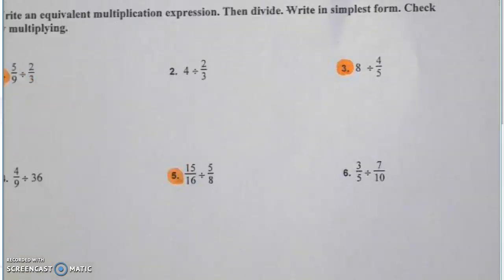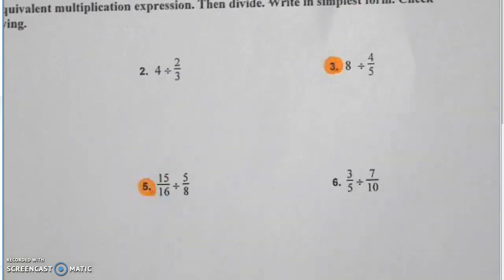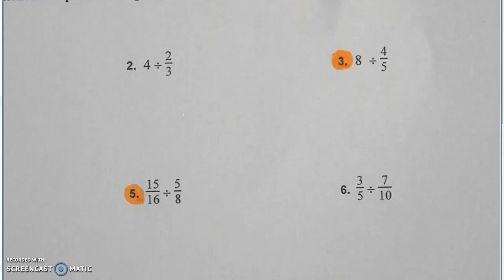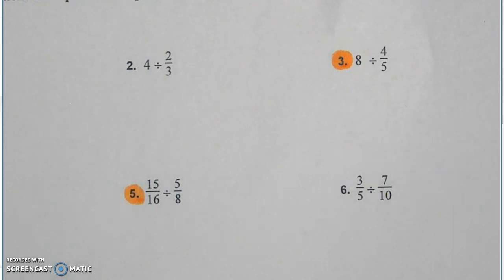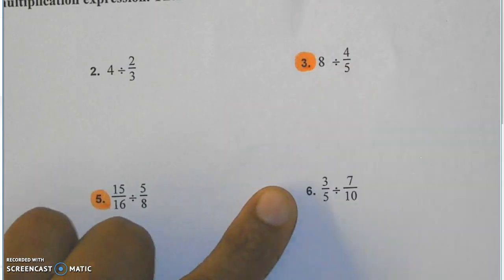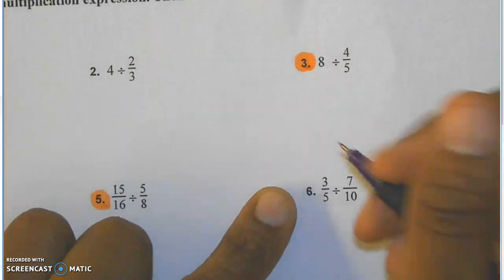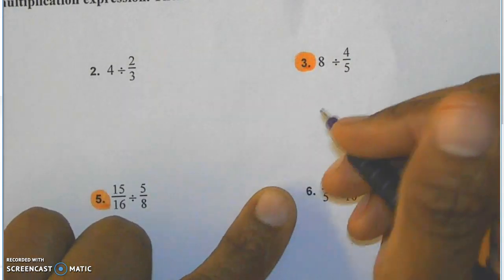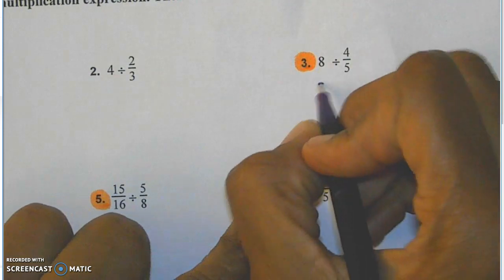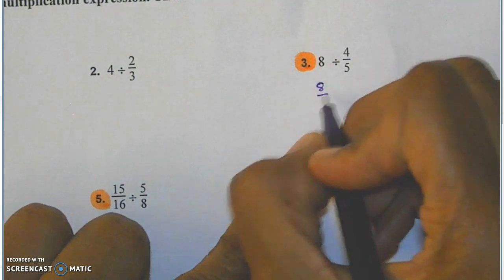We're going to take this first problem, number three, which says eight divided by four fifths. Remember, we don't divide fractions — we multiply by the reciprocal. First we have a whole number, and we talked about yesterday how to make a whole number into a fraction. You do that by placing it over one.